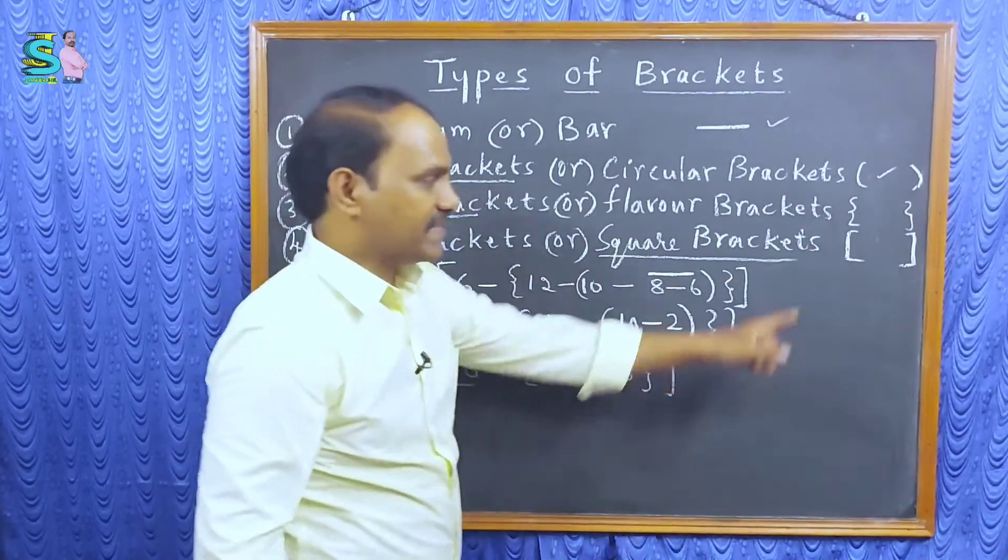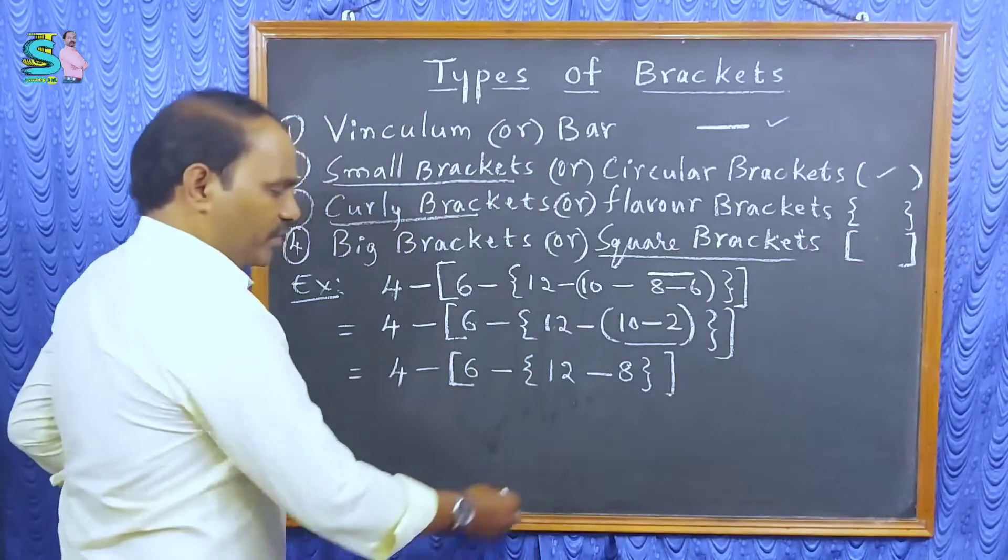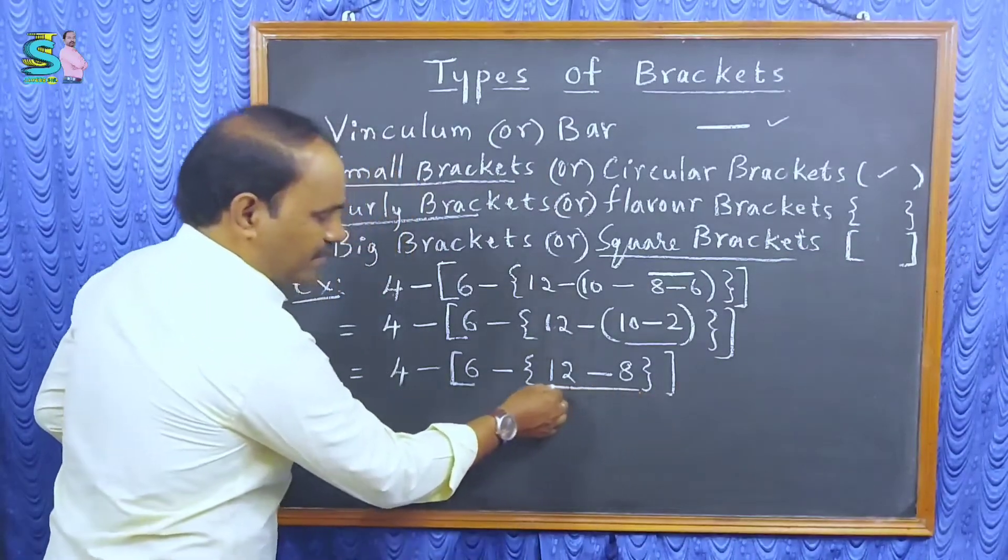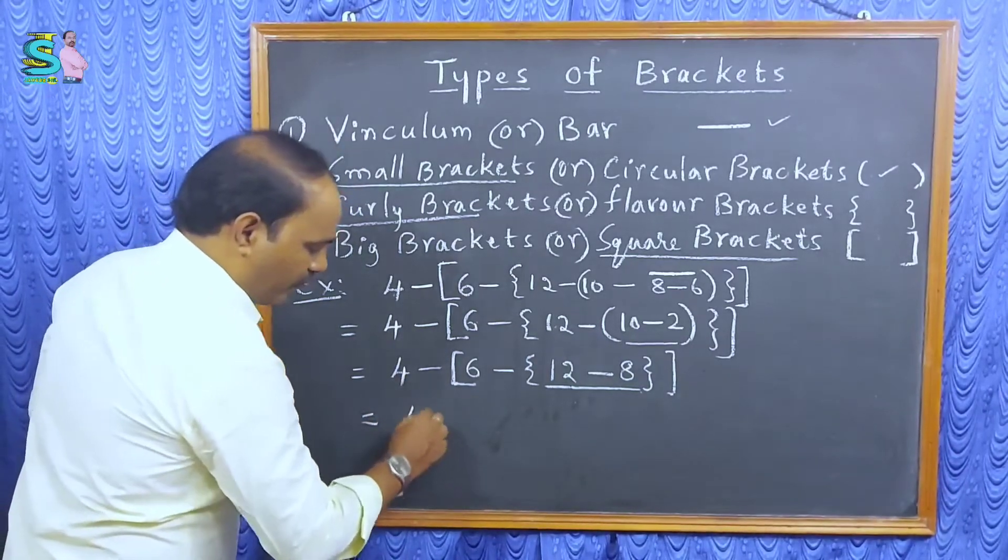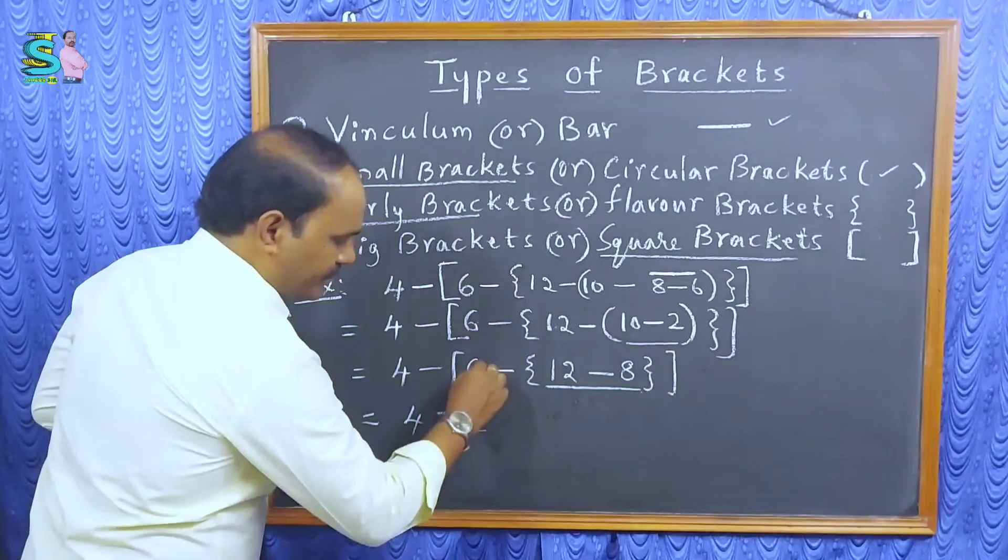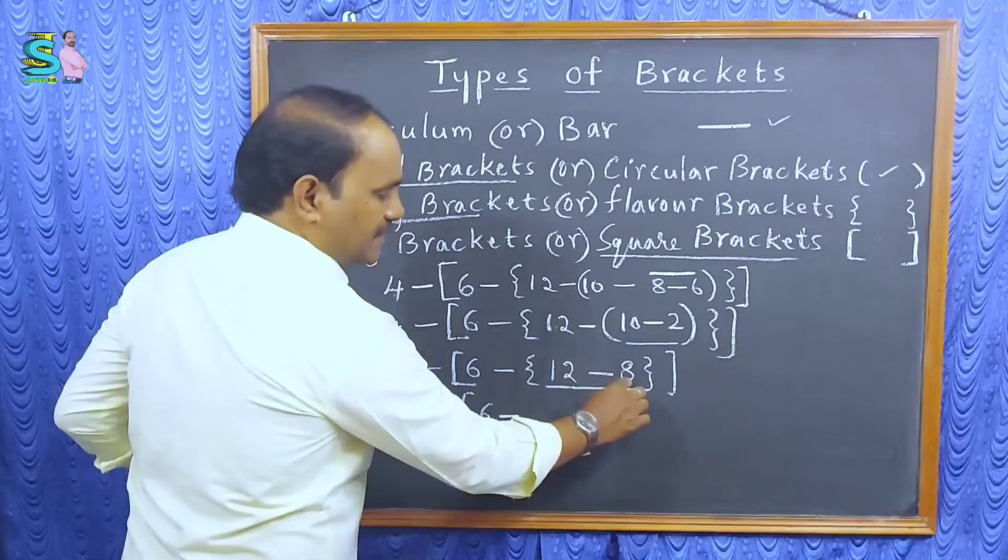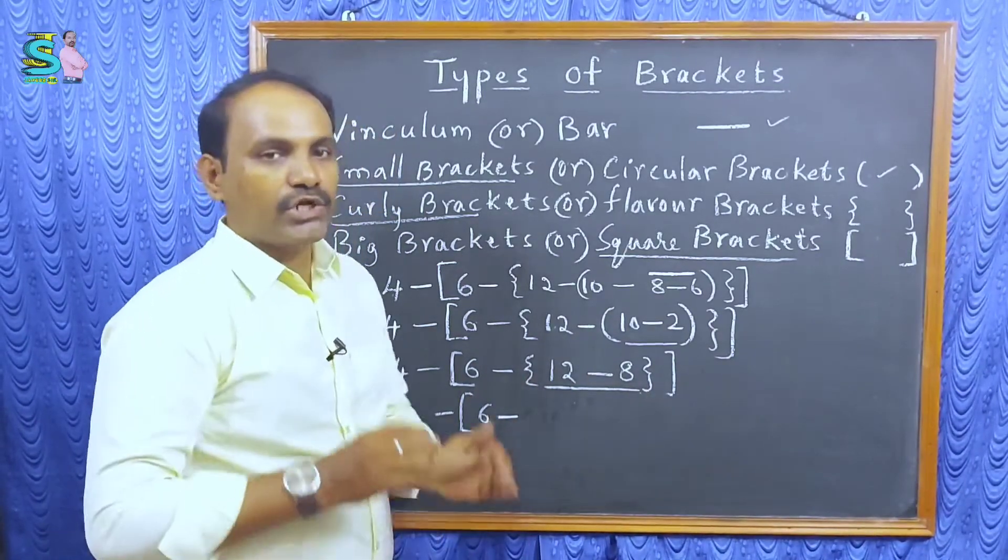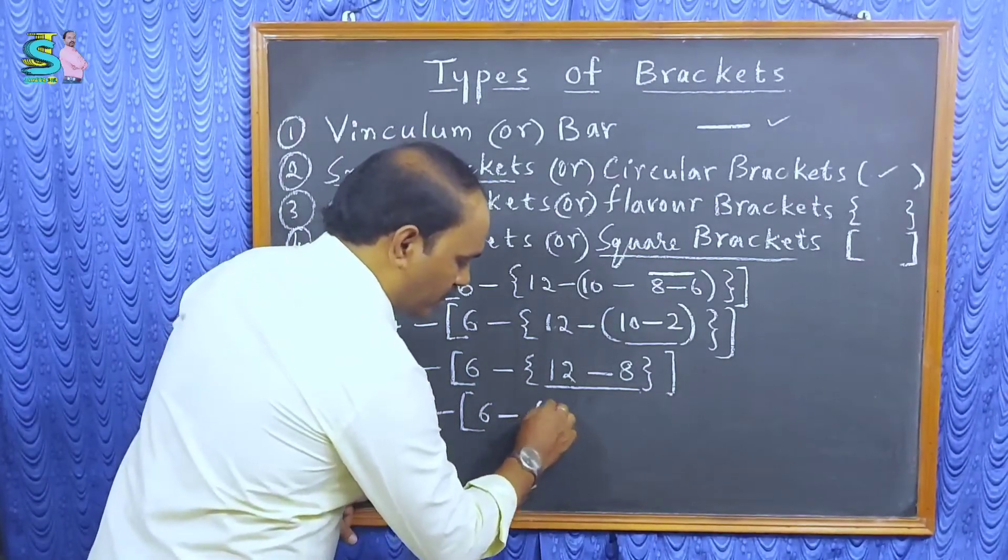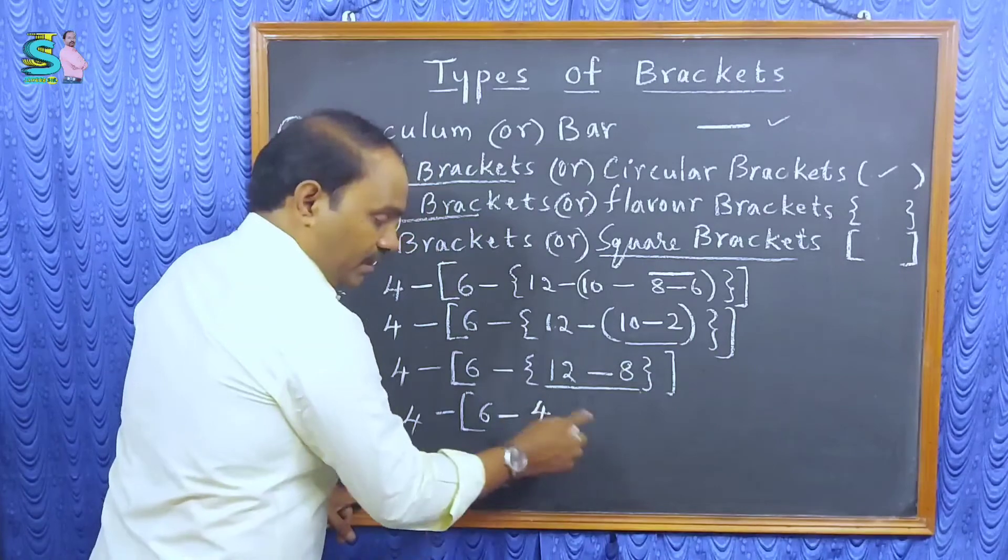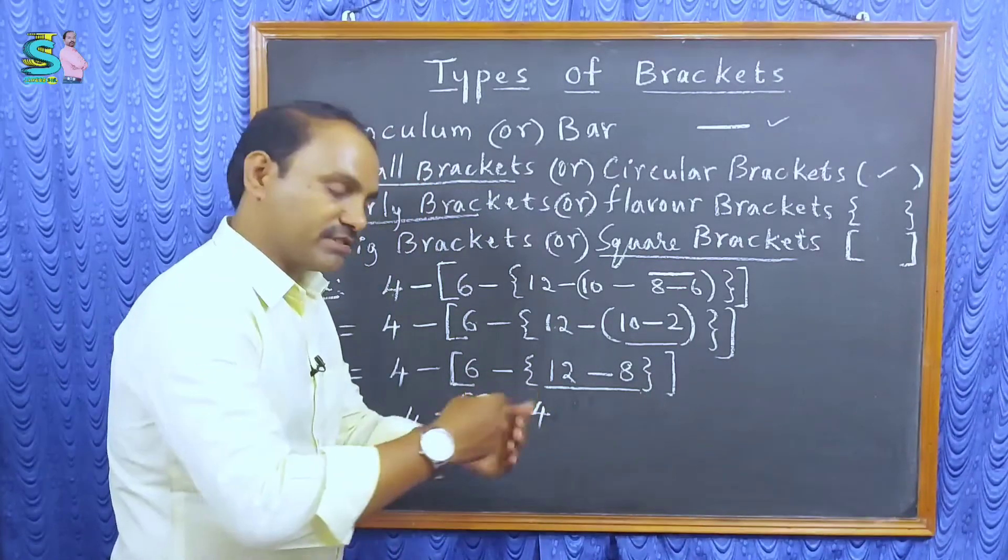Next step. What is next step? Curly brackets. So, we are going to perform the operation or subtraction in curly brackets. Here, 4 minus, 6 minus, 12 minus 8. 12 minus 8 is 4. So, you should write 4. And then, remove those curly brackets. No need to write curly brackets. Remove those.